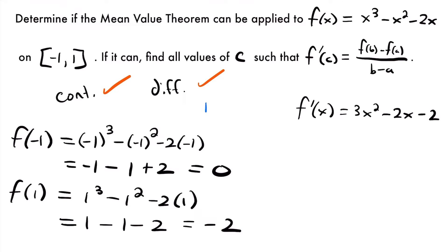Then if we check f of 1, that's going to be equal to 1 cubed minus 1 squared minus 2 times 1, which will be equal to 1 minus 1 minus 2. So 1 minus 1 is 0, and then minus 2 will give us negative 2. Now if we want to calculate our slope, m is equal to f of 1 minus f of negative 1, so we'll have negative 2 minus 0 divided by 1 minus negative 1. Negative 2 minus 0 is negative 2, and 1 minus negative 1 is 2. So our slope is going to be equal to negative 1.